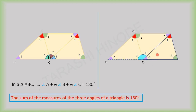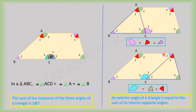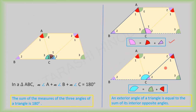If we take this triangle, here also we can see the same — that is, the measure of this exterior angle is equal to the sum of the measures of these two interior opposite angles. That means here we can also see the exterior angle property. So, these are the two properties of a triangle based on its angles.